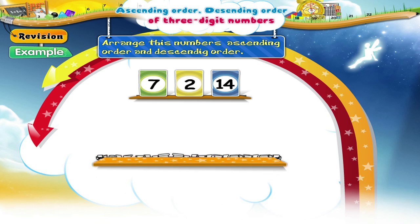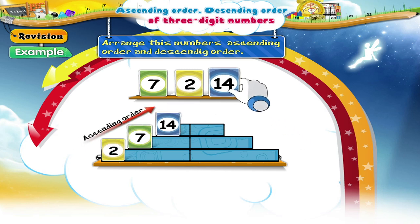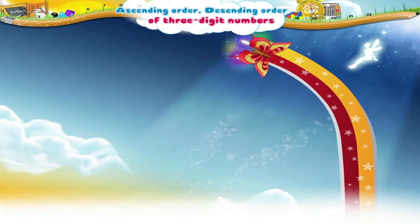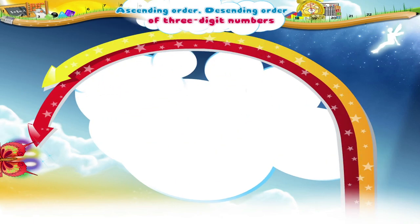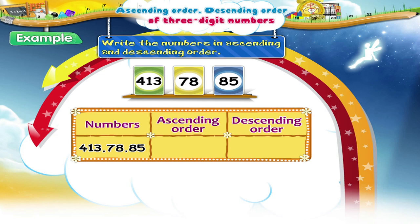Here, take some more stickers. Great job! Now write the ascending order and the descending order. The ascending order is 78, 85 and 413. The descending order is 413, 85 and 78.